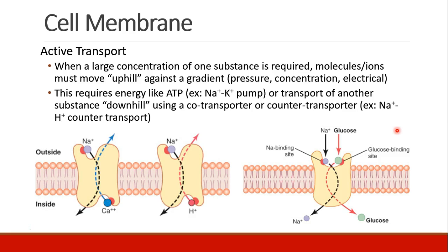The next topic we will review is active transport — the idea that substances can move easily when going down a concentration gradient, but when they need to move uphill against a concentration gradient, we need to use energy like ATP. This is shown in the sodium-potassium pump, where sodium is pumped out of the cell and potassium is pumped into the cell. Other strategies include co-transporters or counter-transporters, where one substance moves in one direction and another moves in the opposite direction, as seen with the sodium-hydrogen counter-transporter.